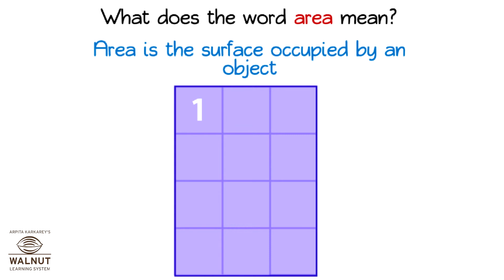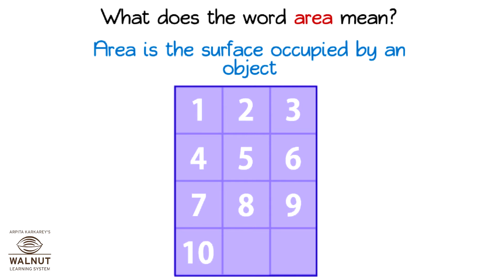How many such squares do you see inside this rectangle? 1, 2, 3, 4, 5, 6, 7, 8, 9, 10, 11, 12. We see 12 squares. So the area is 12 square centimeters.